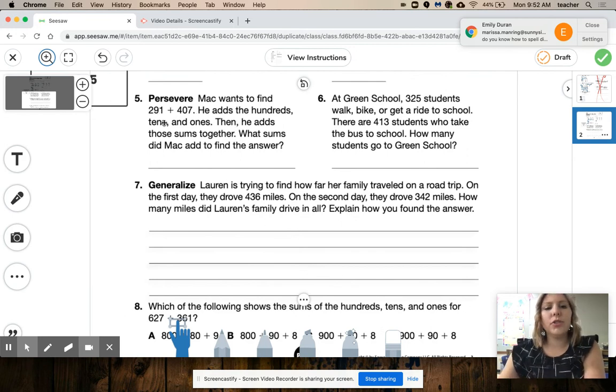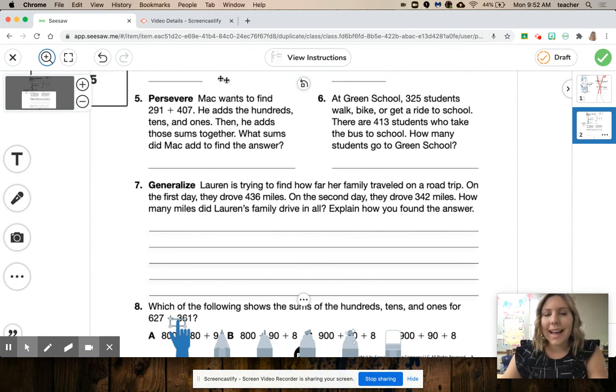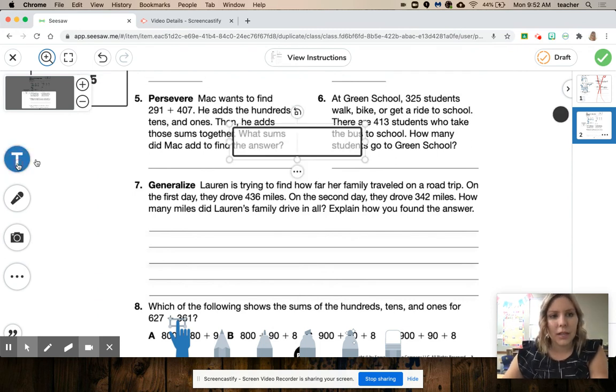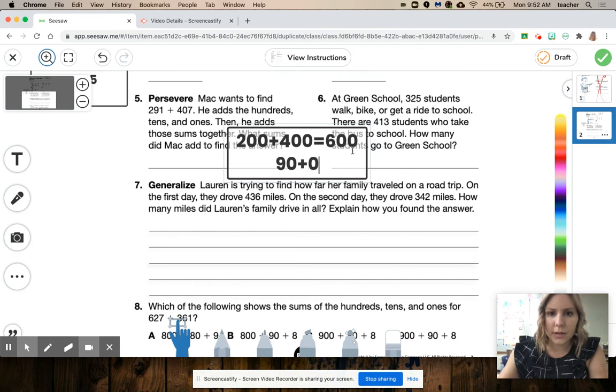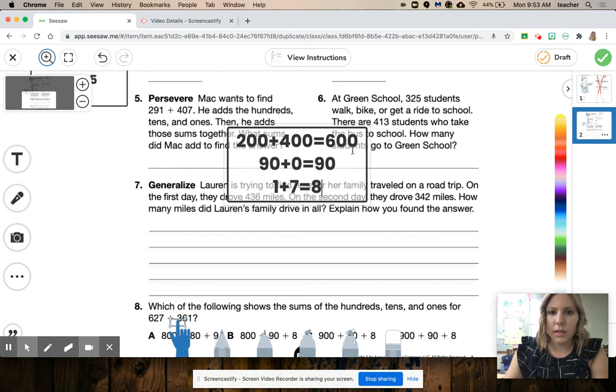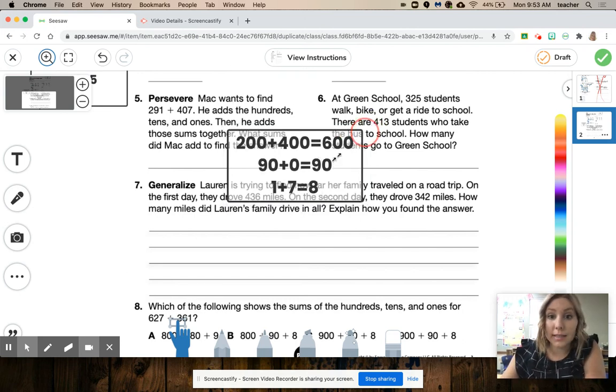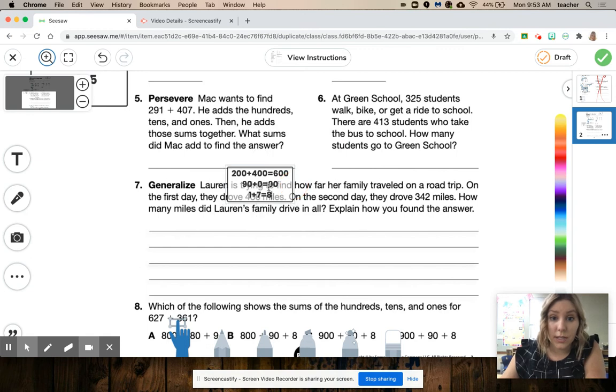Mac wants to find 291 plus 407. He adds the hundreds, tens, and ones. And then he adds those sums together. What sums did Mac add to find the answer? It's not asking for the answer, y'all. It's asking what did he add together to get the answer. So he added 200 plus 400 to get 600. Then he added 90 plus 0 equals 90. Finally, he added 1 plus 7 equals 8. That's what it's asking you to do. Same thing. You can make it nice and small and just move it over there.